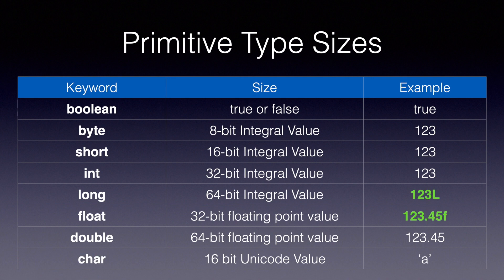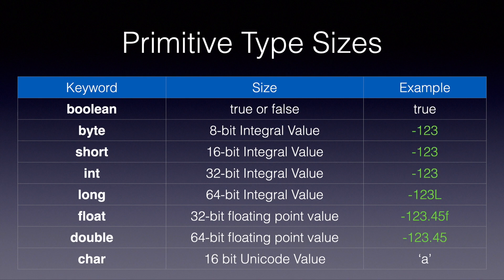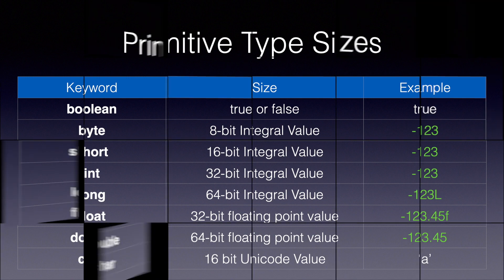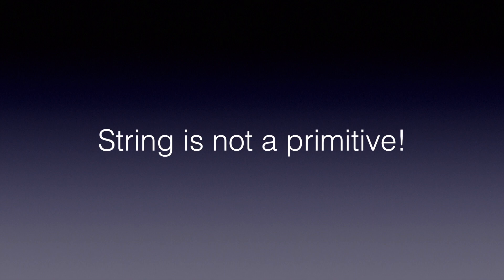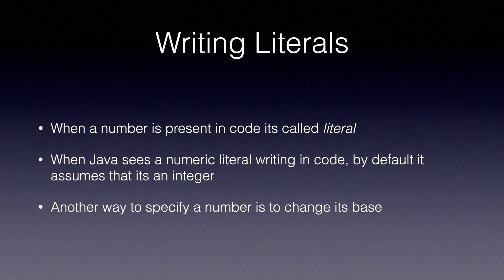When we assign an integral value to a long, we have to use the letter L at the end, and similarly we need the letter F for float. Also note that boolean and character cannot have negative values, but all other types can. Just want to highlight that string is not a primitive — it looks like one but it is not. Whenever a number is present in code it's called a literal, and java assumes a numeric literal is an integer, which is why we have to use the letter L when writing a long.